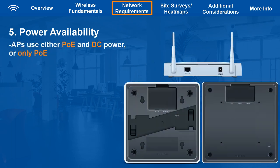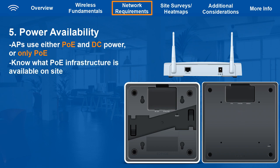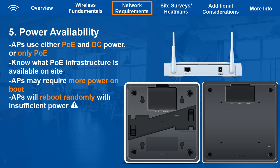In terms of power availability, Sophos APs can be powered through Power over Ethernet or DC power. Some AP models support both, while some only support PoE, so be sure to know what your APs require. Make sure you know what PoE infrastructure your site has available, and keep in mind that APs can require more power on boot than advertised. Be sure your PSE can supply more than the minimum requirements, because if an access point doesn't receive enough power, it can start rebooting randomly.